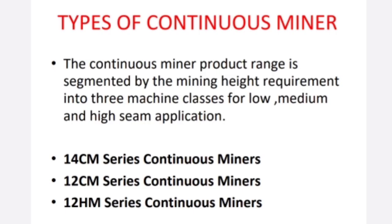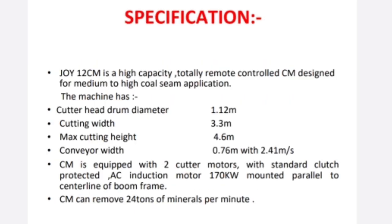The types of continuous miner are ranged based on the minimum height requirement of the machine — low, medium, and high. The main series are the 14CM series, the 12CM series, and the 12HM series continuous miners.